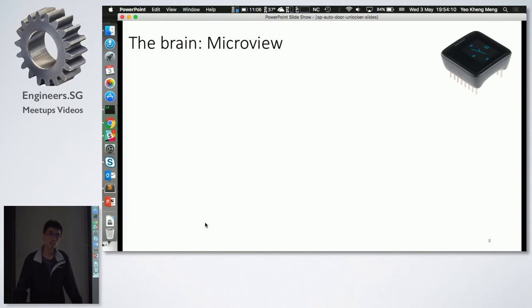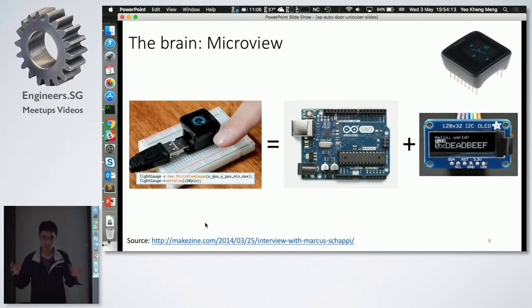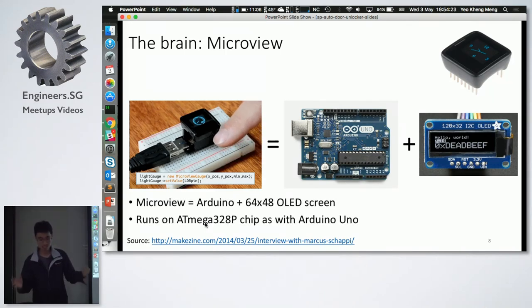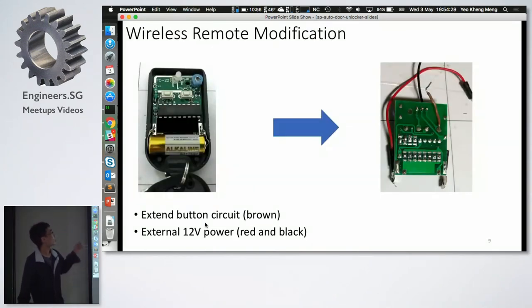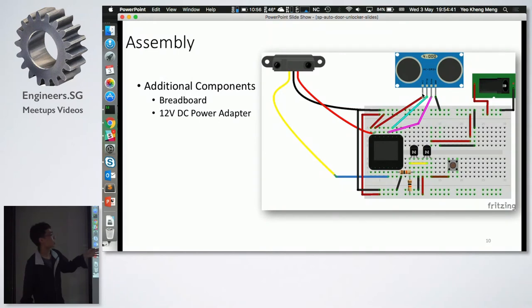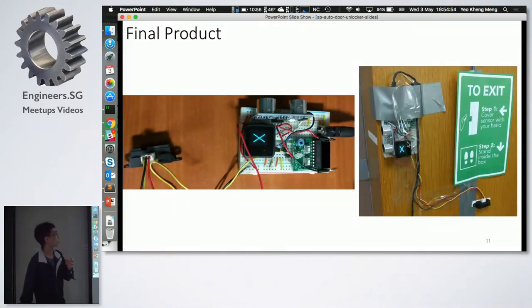So the brain of this, I use a Micro View. A Micro View is basically a combination of Arduino and OLED screen in a very small size. You can see, you can reference the breadboard here, it's very small. It's the same ATmega328P chip, same as Arduino Uno. So now let me try to modify the wireless remote. What I do is I find out where the two button points are and then I just solder some wires out. Then this is how I assemble it. Don't worry about this schematic. Basically, the Micro View gathers data from the two sensors and then it will trigger the wireless remote.